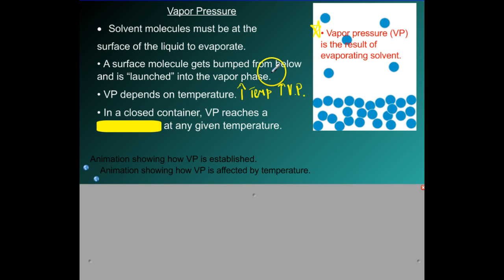The last part here we want to make note is that in a closed container the vapor pressure will always reach a constant level at any given temperature. In that animation that we saw, it was a closed container, it had a lid on it, and as long as it's in a closed container it will reach a constant level no matter what.